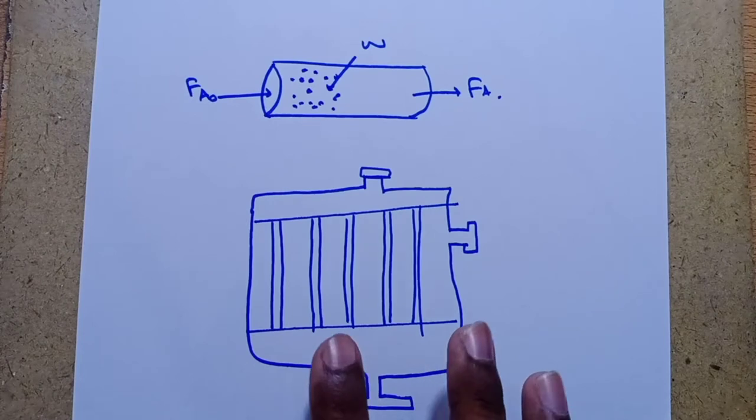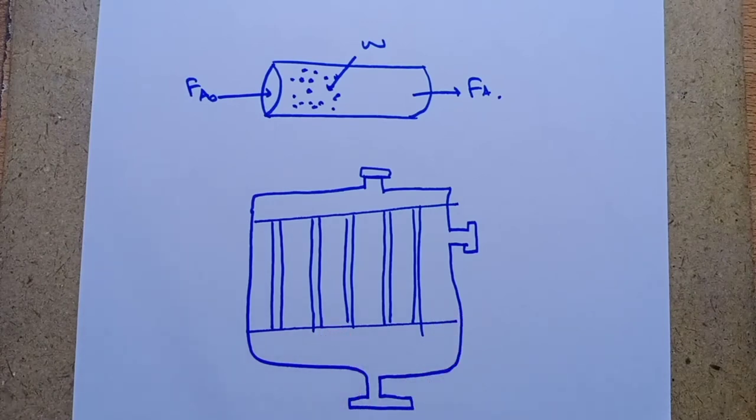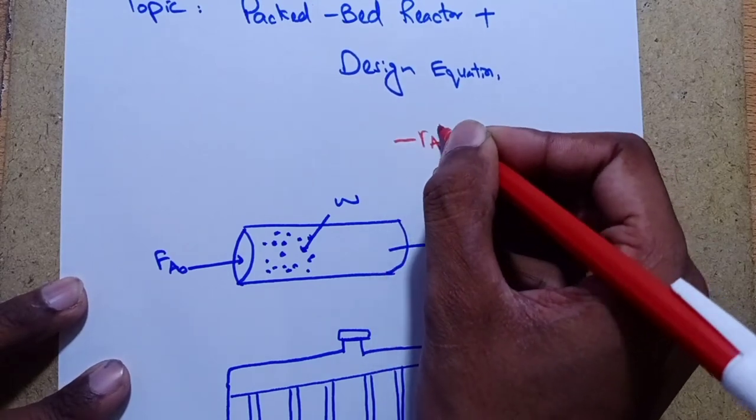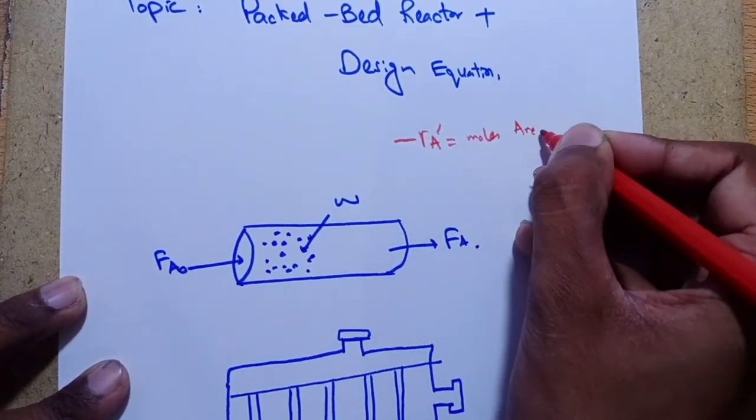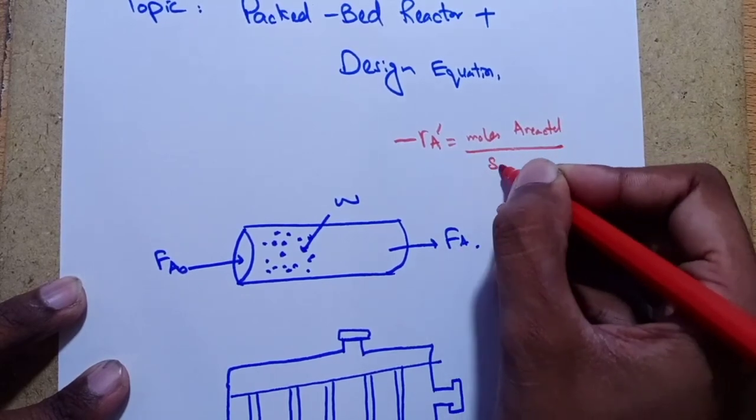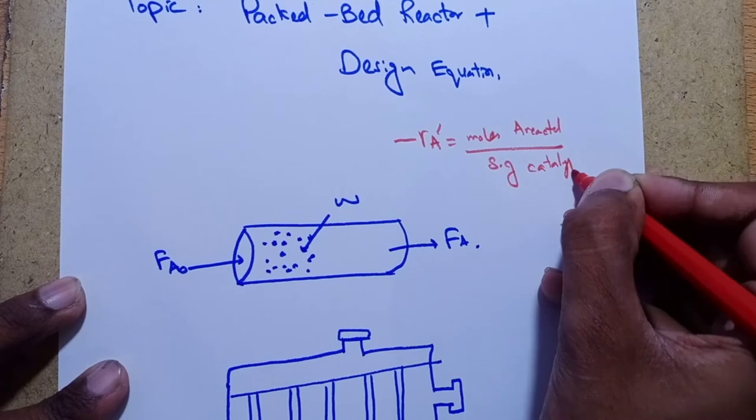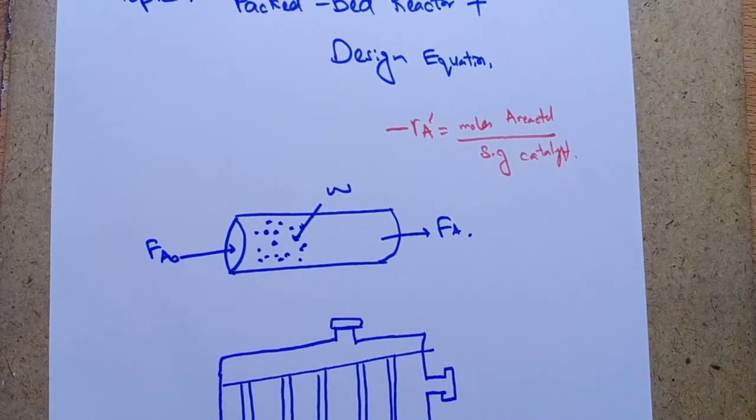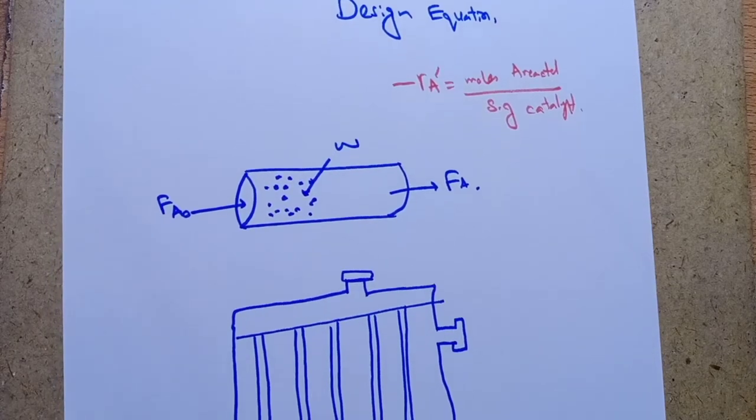For a fluid-solid heterogeneous system, the rate of reaction of substance A... when we talk about the rate of reaction for a fluid-solid system, catalyst is used because the amount of catalyst is what is important to us, and we relate this to the rate of production or formation.